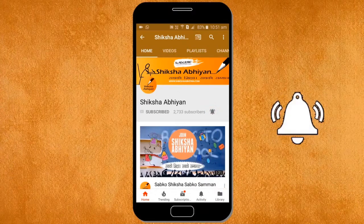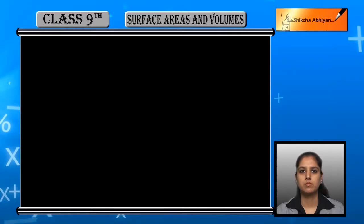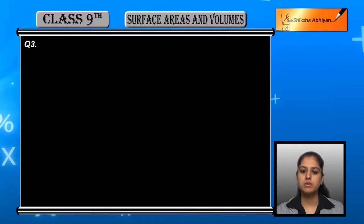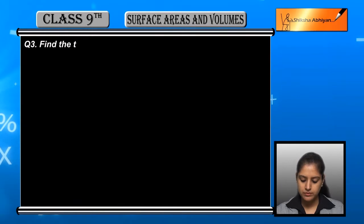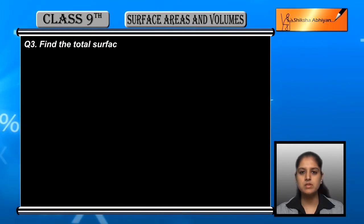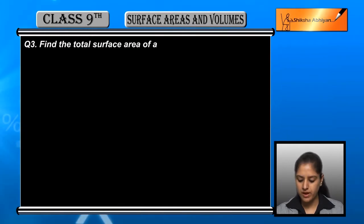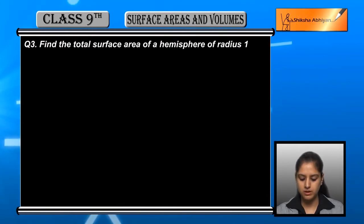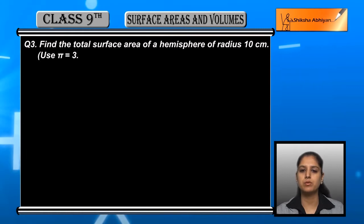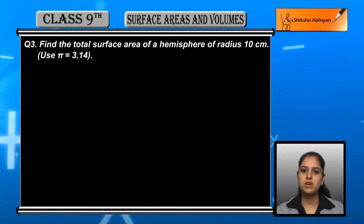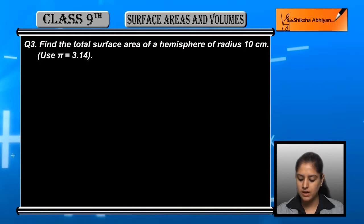Question number three: find the total surface area of a hemisphere of radius 10 centimeters, and use pi as 3.14. The hemisphere surface area formula is required here.